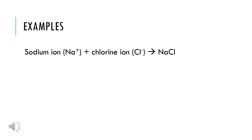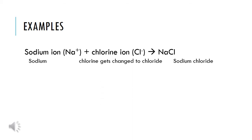Let's look at a couple of examples. Here we have the sodium ion, Na+, plus the chlorine ion, Cl-, yielding NaCl, or table salt. The sodium ion Na+ is our cation, and when we name it, the cation's name stays the same — sodium. The chlorine, however, is your anion, so remember that the ending gets changed to -ide. So chlorine gets changed to chloride. Together, it's written as sodium chloride.